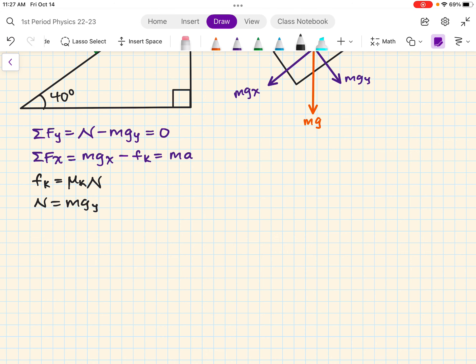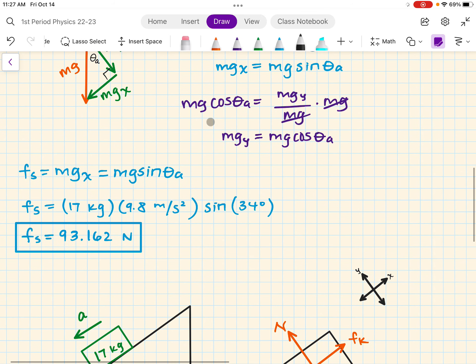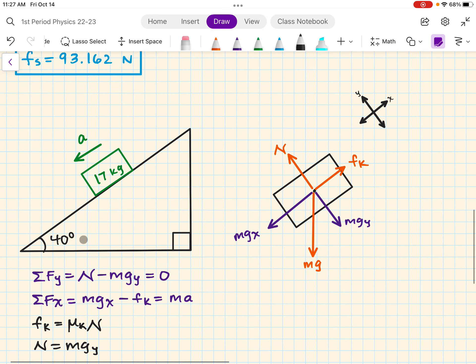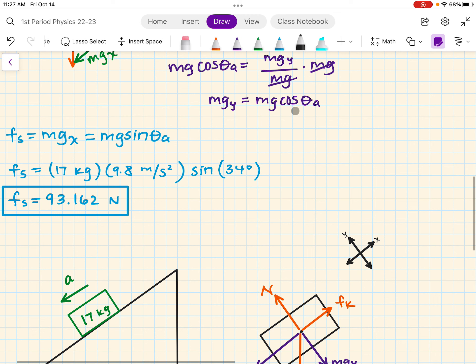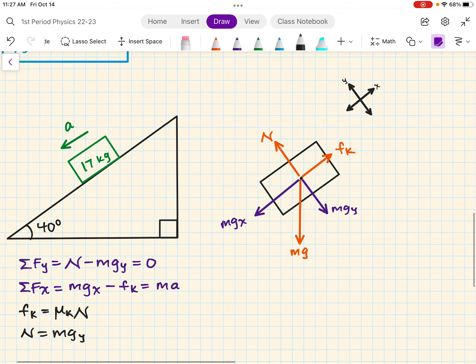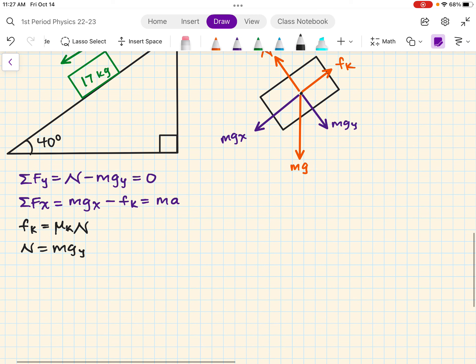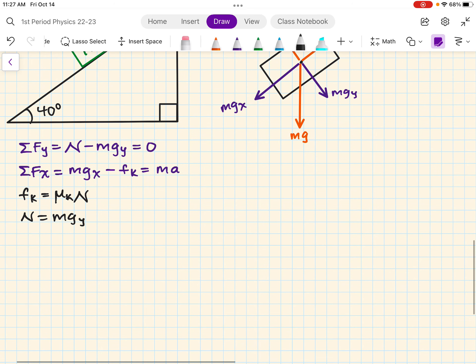So we know that the normal force is then mgy. In the previous video, I said, well, I'm just going to solve for mgy in case I need it. Now I do need it. The only thing I've got to change is the angle, right? Theta a was 34 degrees. Theta b is now 40. So mgy, using trigonometry, is equal to mg cosine theta. So then, normal is equal to mg cosine theta b. All right.